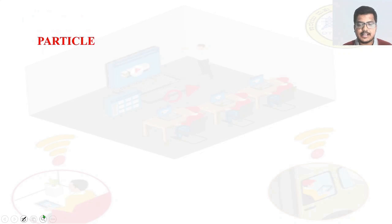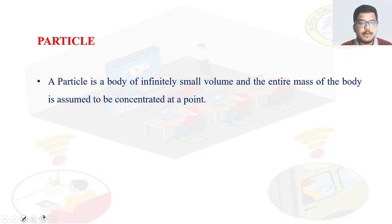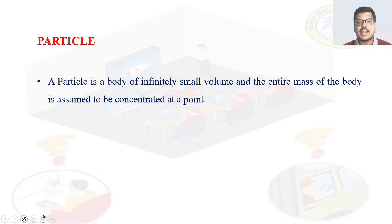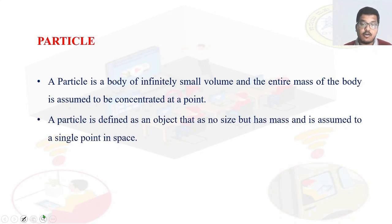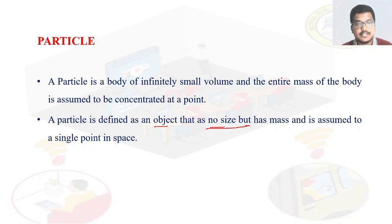The first basic idealization is the concept of a particle. A particle is a body of infinitely small volume, and the entire mass of the body is assumed to be concentrated at a point. A particle may also be defined as an object that has no size — zero size — but has mass and is assumed to be a single point in space.